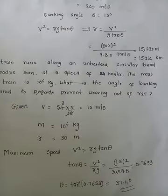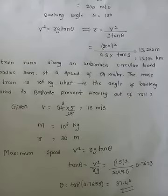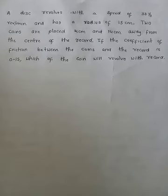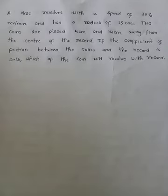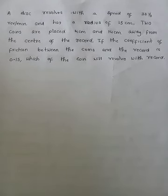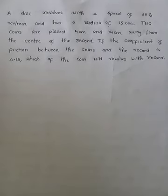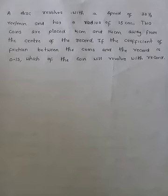The banking angle between the outer edge and inner edge is 37.4 degrees for the train moving on an unbanked road. Next, the last question: a disc revolves with a speed of 33⅓ revolutions per minute and has a radius of 15 centimeters. Two coins are placed 4 centimeters and 14 centimeters away from the centre of the record. The coefficient of friction between the coins and the record is 0.15. Which coin will revolve with the record?